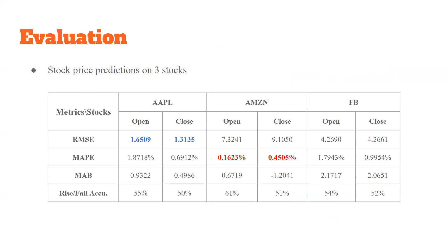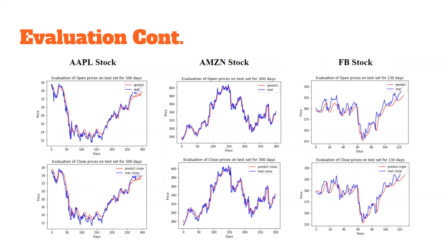Here are our evaluation results of stock price prediction on three different stocks: Apple, Amazon, and Facebook. We use red to highlight the smallest MAPE, which shows that the Amazon model has better performance than the other two. Comparing the Apple and Facebook models, the RMSE of the Apple model is much smaller than the Facebook model, indicating better performance. Here is the plot of our results.